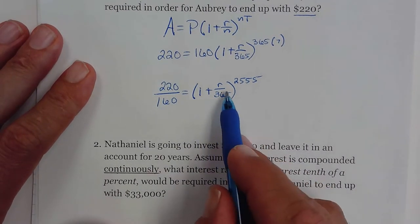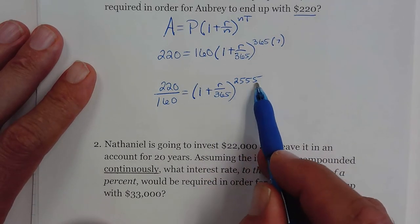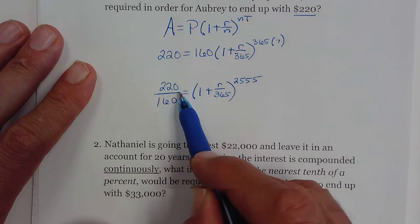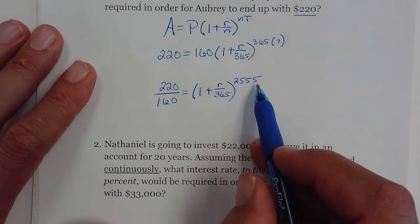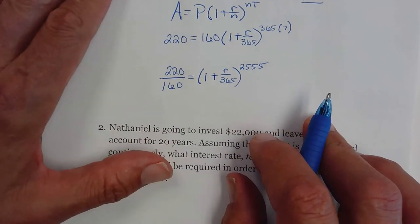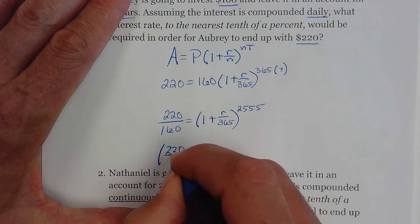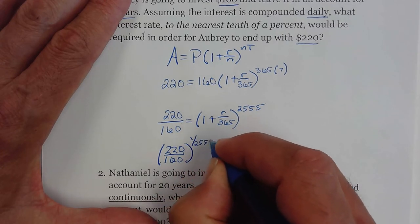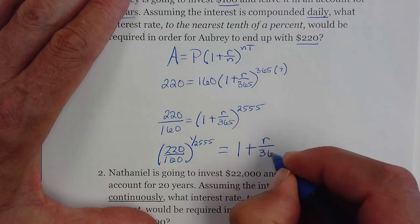All right, so we need to get this thing all by itself. Your next step on this one is you got to look at your exponent, and what you're going to do is raise this side to one over that number. So we're going to take this and raise it to 1 over 2555, and what that enables us to do is this makes this disappear and turn into one. So you're going to take 220 divided by 160 and in your calculator raise that to 1 over 2555.